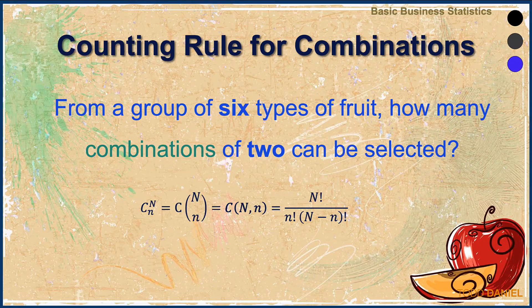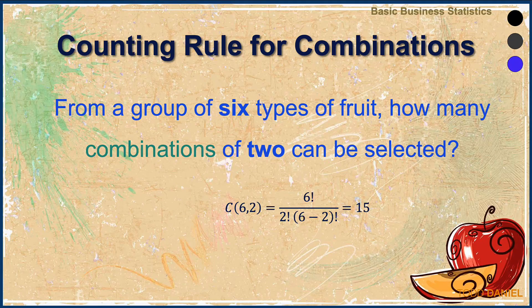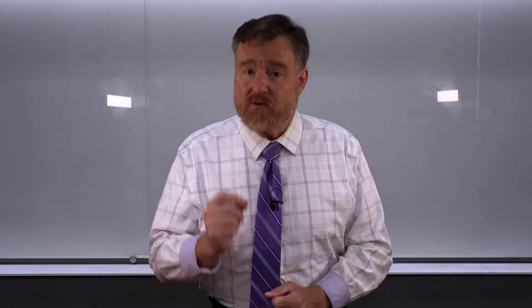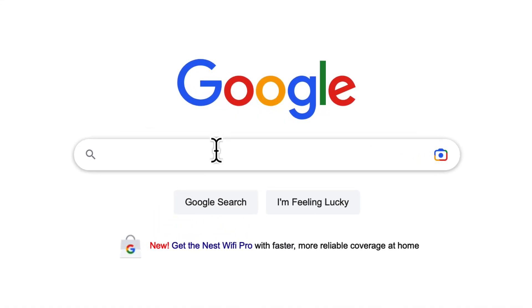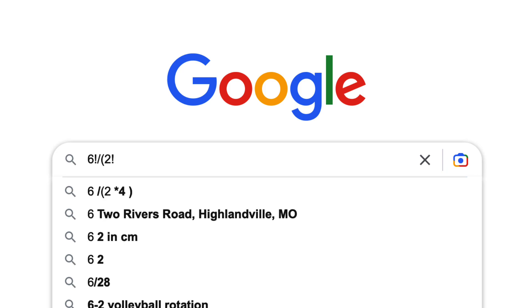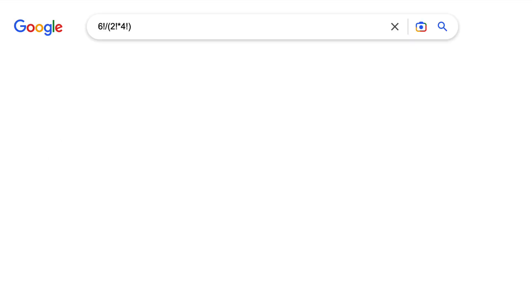Let's start a little more simply with our fruit example. From a group of six types of fruit, how many combinations of two could be selected? Here is the formula for the counting rule for combinations. The first part reads: how many combinations of two can be selected from six? The math involves six factorial divided by two factorial times six-minus-two factorial. Using our simple table of factorials, we come up with a total of 15. You can also enter this into a Google search window as a calculator: six factorial divided by two factorial times four factorial equals 15.